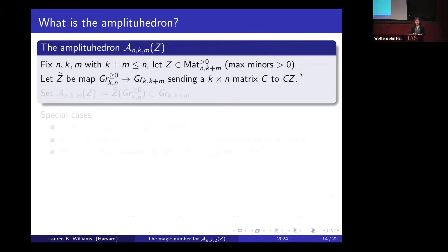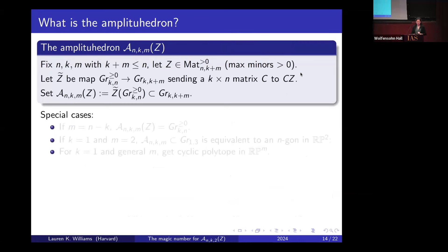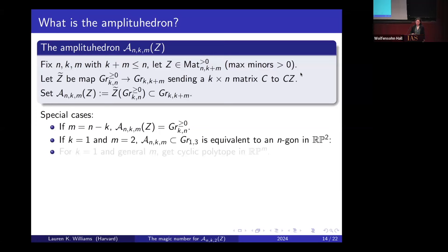In special cases the amplituhedron recovers well-known objects: when k equals 1 and m equals 2, the amplituhedron is equivalent to a polygon in RP^2, and for general m with k equals 1 we get a cyclic polytope.